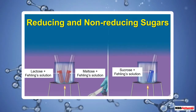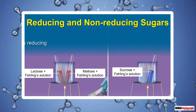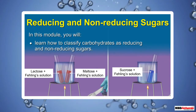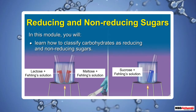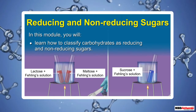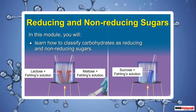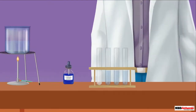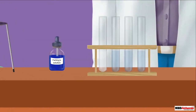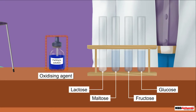Reducing and non-reducing sugars. In this module you will learn how to classify carbohydrates as reducing and non-reducing sugars. Let us begin our study by considering the reaction of common carbohydrates with an oxidizing agent like Fehling's solution.